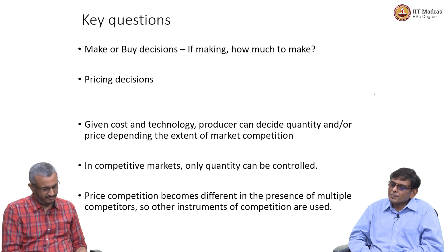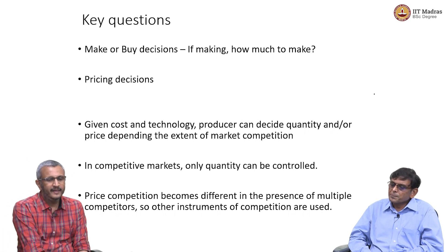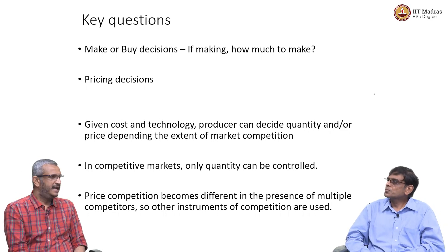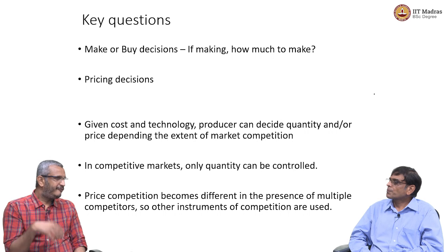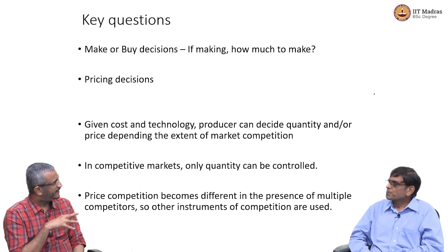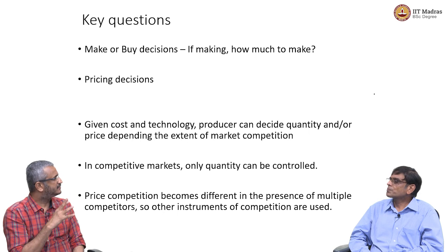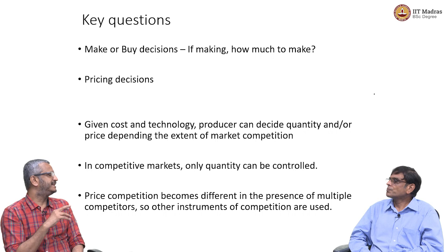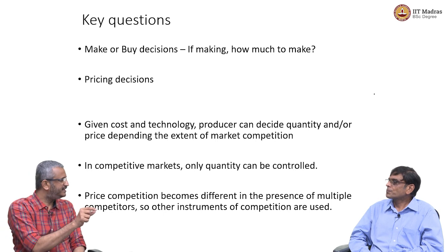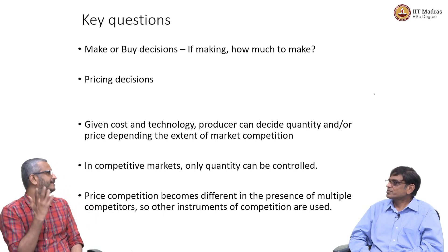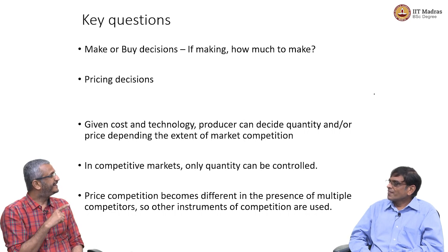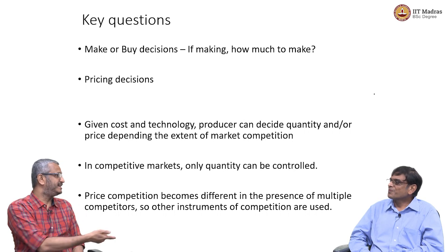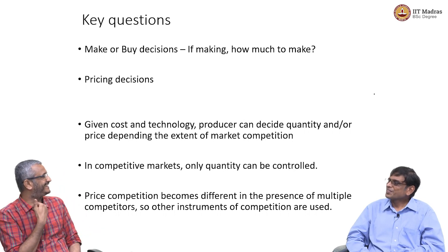The third important concept is that quantity decisions are very important — how much to produce? A firm has control over two variables basically: quantity, price, or both. Depending on the type of market in which the firm operates, it can vary the quantity, vary the price, or more. If it is a monopoly, it can do both. In an oligopoly, sometimes it can vary one, but immediately it might invite rivals to respond.